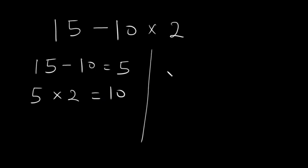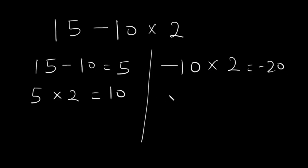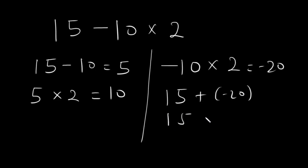For the second approach, let's take it from the opposite side. Negative 10 times 2 is equal to negative 20, and 15 plus negative 20, which is equal to 15 minus 20, is equal to negative 5.